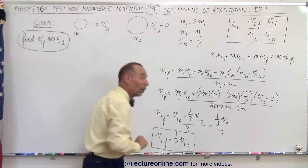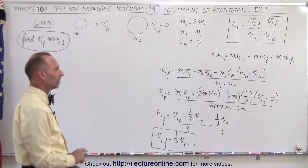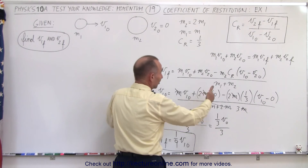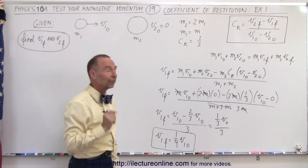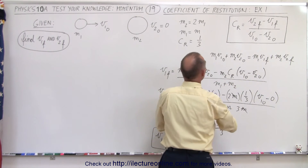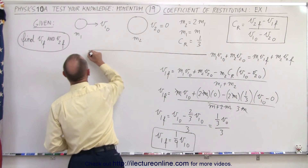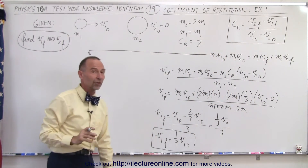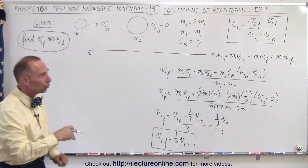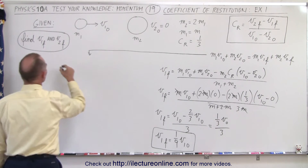All divided by 3, which means v1 final is equal to one-ninth v1 initial. Now for v2 final, we can plug the result in and use the momentum equation to calculate v2 final. So in the next video we'll use the other equation and compare the two to check if we did it correctly. Let's find v2 final here.